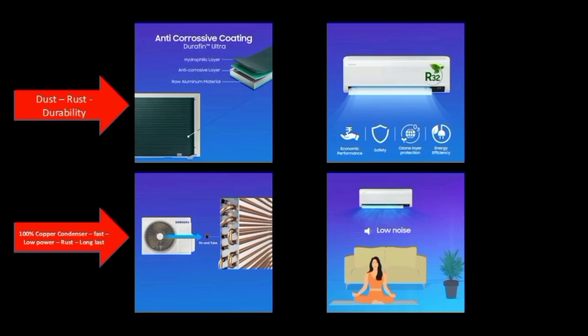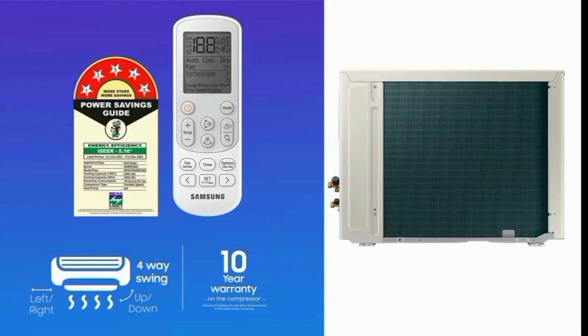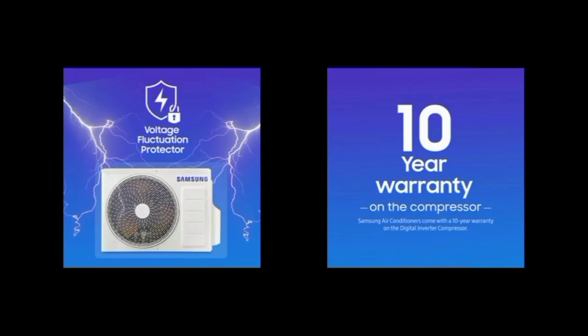If you use this AC, it uses R32 refrigerant. With the green color anti-corrosion coating and R32 gas, the system is efficient. For power fluctuation protection — sometimes the power supply is less — the voltage fluctuation protection keeps the AC stable, preventing product damage.